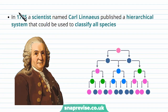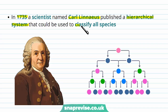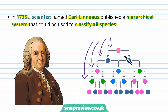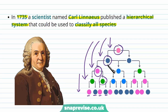In the year 1735, a scientist called Carl Linnaeus published a hierarchical system — a system with several layers and a hierarchy to it — which would be used to classify all different species. The system he designed had different layers, and as you go down the layers you get more and more subgroups, eventually getting right down to a specific organism in its right place. Therefore, all organisms belong to particular subgroups and groups.